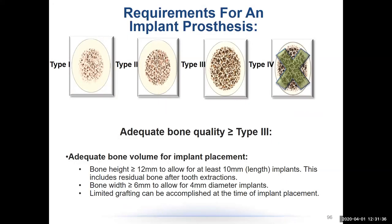Some requirements for an implant prosthesis: adequate bone volume is essential. Bone height needs to allow about 12 millimeters for at least 10 millimeters of implant length. This includes residual bone after extractions, and bone width greater than six millimeters to allow at least four-millimeter diameter implants. Limited grafting can be accomplished at the time of implant placement. I've seen presentations showing failed implants placed in inadequate bone — that's frightening — so adequate bone quantity is a prerequisite.